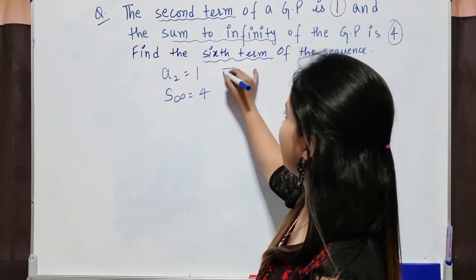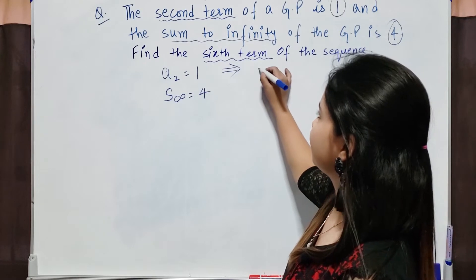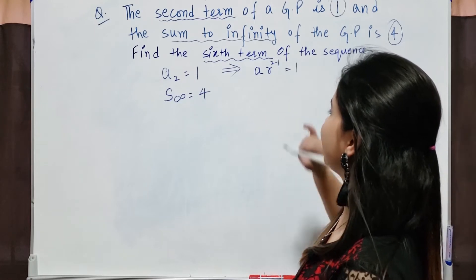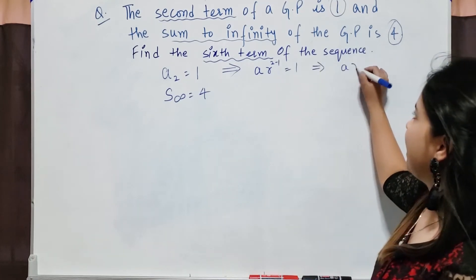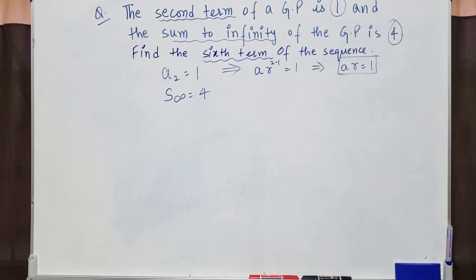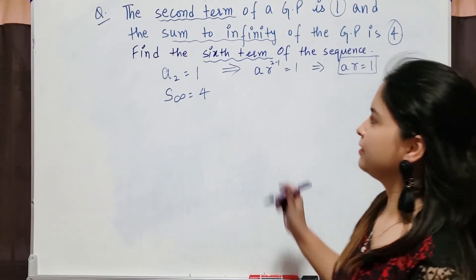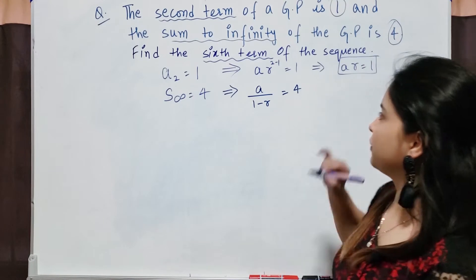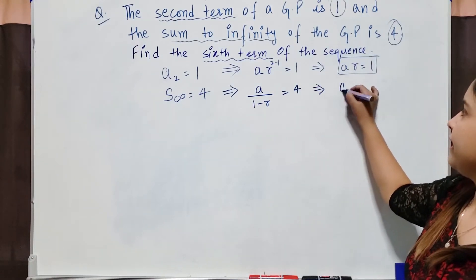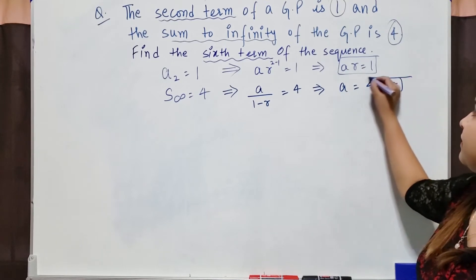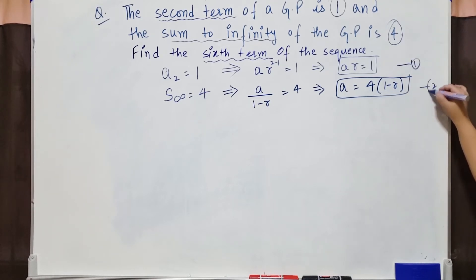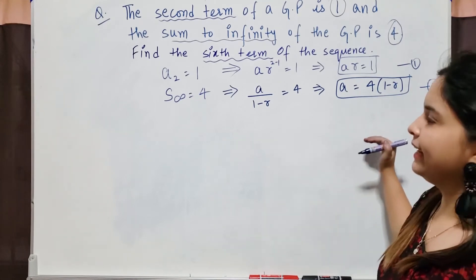Now open both formulas. First I will use the general term formula: a₂ = ar raised to power (2 minus 1) = 1, so ar = 1. Now open the second formula: S∞ = a over (1 minus r) = 4, or a = 4 times (1 minus r). Now using equation 1 and equation 2, find the value of a and r. Then using a and r, I can find the sixth term.